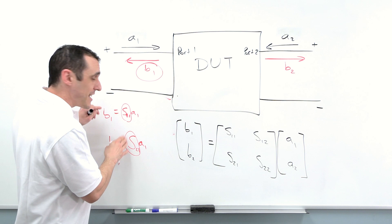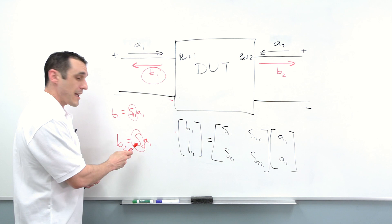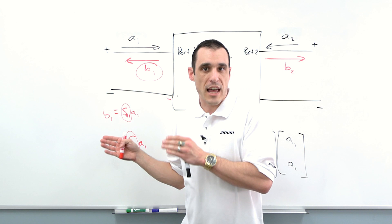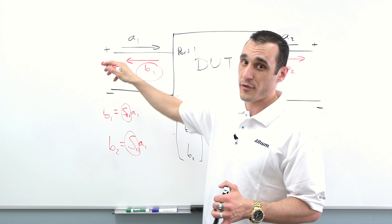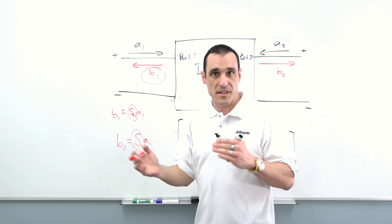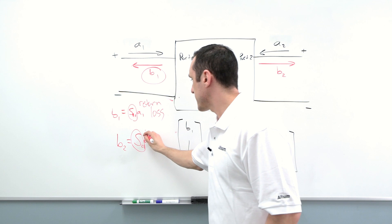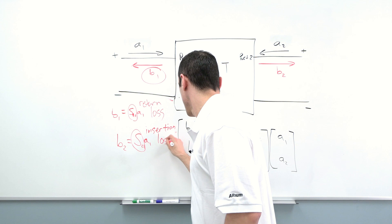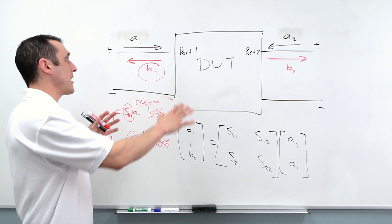S11 tells me everything that A1 experiences as it enters port one and is reflected. S21 tells me everything that happens as A1 is transmitted and then lost along the way as it reaches port two. If you look at a data sheet for an antenna or other RF component, you'll actually see two graphs: S11 and S21. If you ever see someone talking about reflection loss or return loss, they're talking about S11. If someone talks about absorption, dielectric loss, or transmission through a network, they're talking about S21 — sometimes called insertion loss.